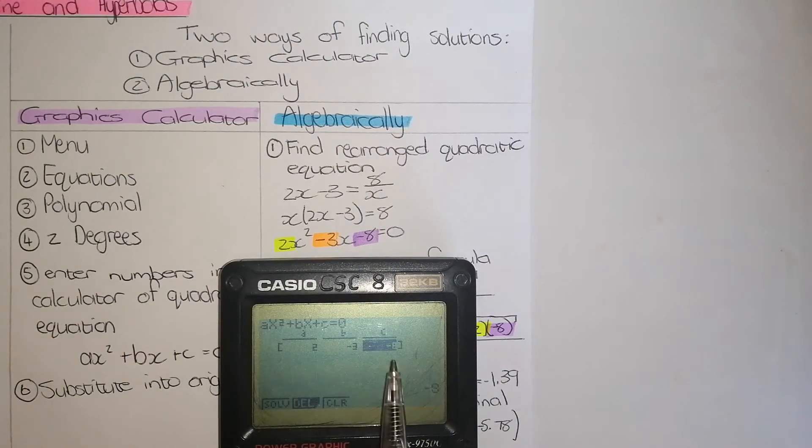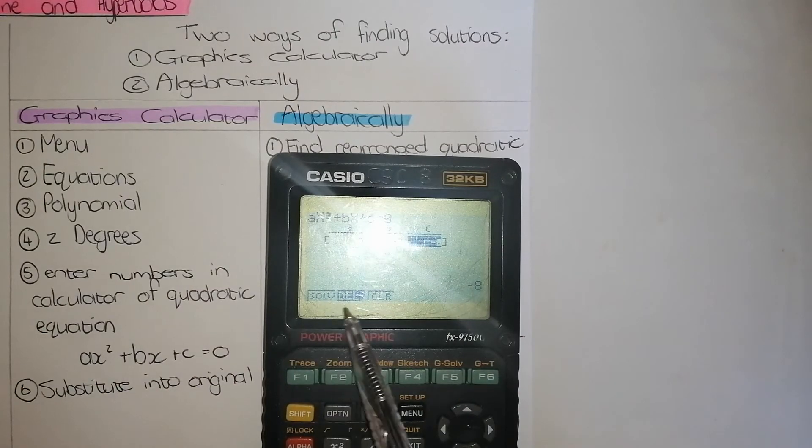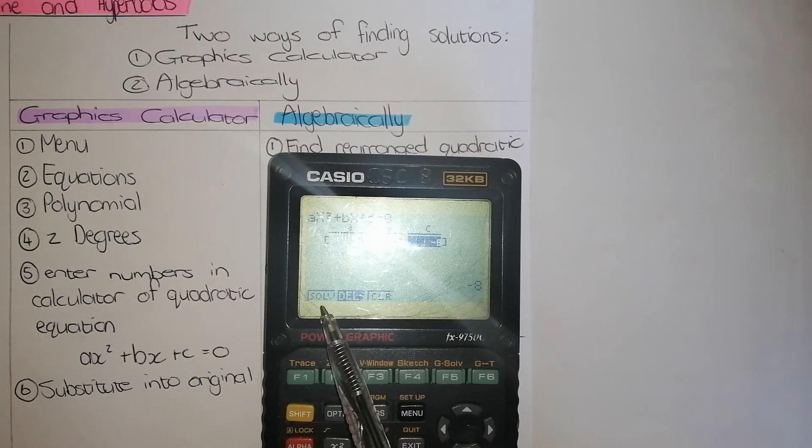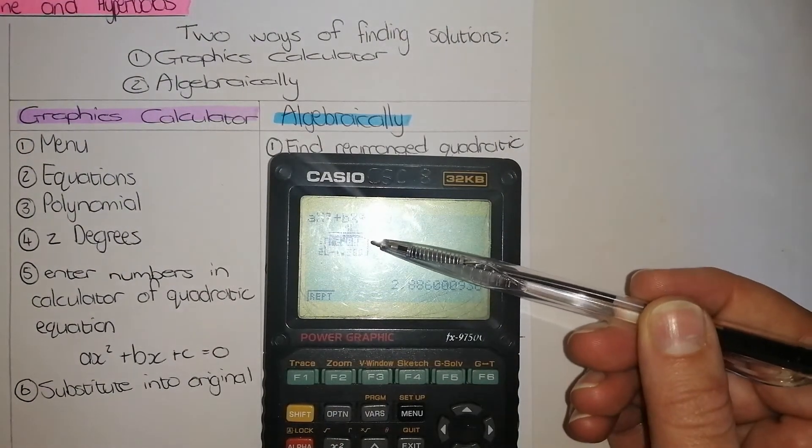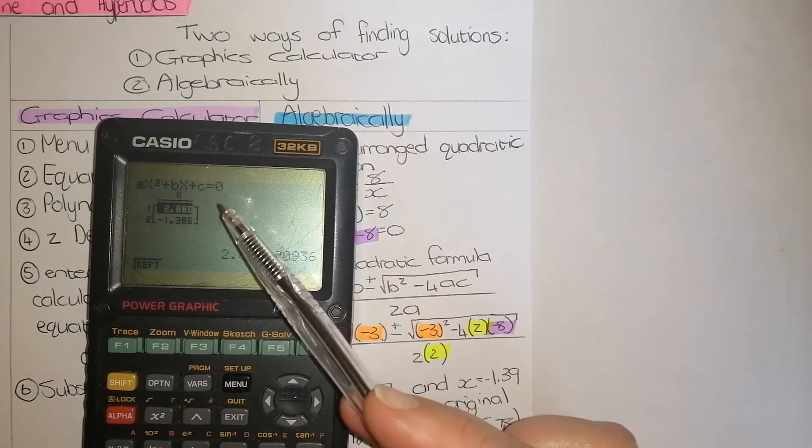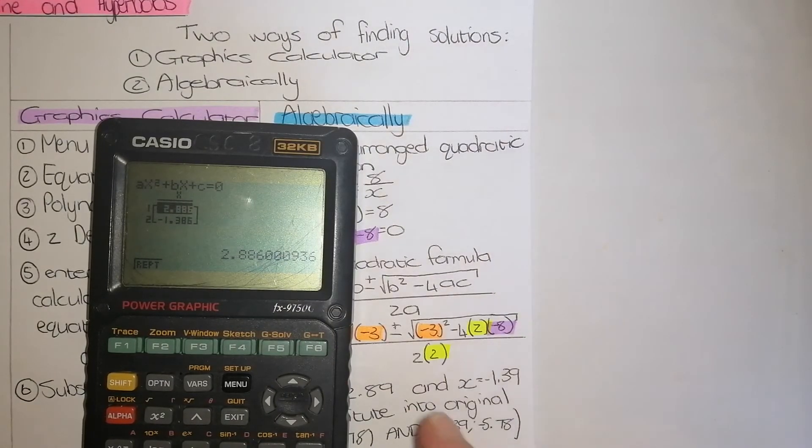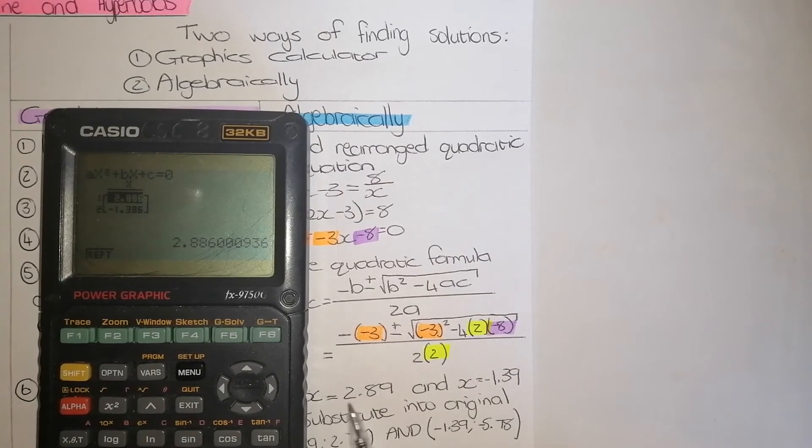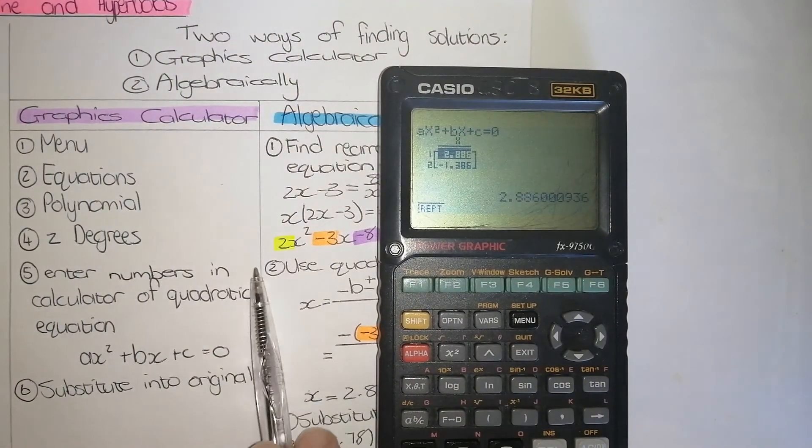Now I've got my A, B and C written in there. If you look on the screen, you will see that there's a solve, delete and clear. I want to solve because I want to find the values. So therefore, I'm going to press F1 and on the screen, it will give you your two X values at 2.8 and negative 1.3. If we look at the algebraic equation we have done, you will also see it's 2.89 and negative 1.3. So now that I've got my X values, I need to go to my next step, which is number 6.